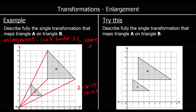What we could also do to check is: if we started at the origin, we go two across and two up to get to this point on A. If I multiply that by 2.5, so two times 2.5 — two and a half twos is five — so five along and five up to get to the same point on B. So the distance from the center of enlargement to a point on A, times the scale factor, gives the distance to the corresponding point on B.